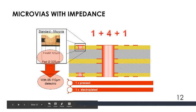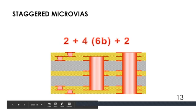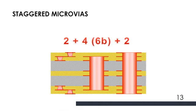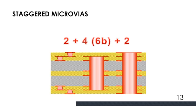This is a single lamination and electroplated. This is a staggered microvia: 2+4+6B+2. So 6B is the buried structure. There is a microvia between layers 2 to 3, 1 to 2, then 8 to 7, 7 to 6.